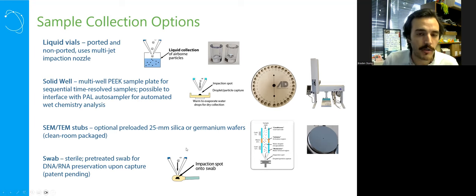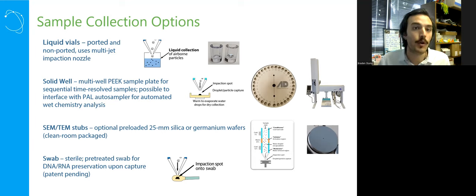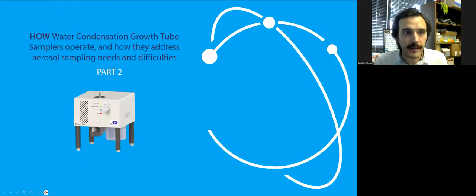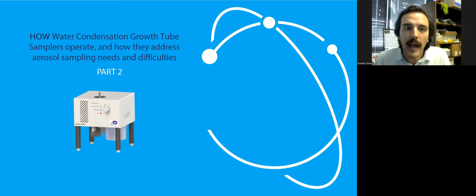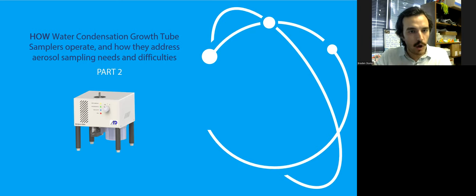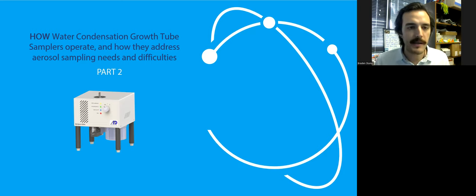Our method of sampling really allows for a lot of flexibility and convenience in how you're handling your sample, which ergonomics-wise can be a big deal. So on to part two of this presentation: how these water condensation growth tubes operate, how they address aerosol sampling needs and difficulties. This is the theory section. I'll be giving the high points, the 10,000-foot view, but if you'd like to learn more I'd be happy to describe further in a follow-up meeting.